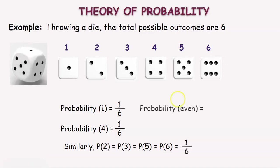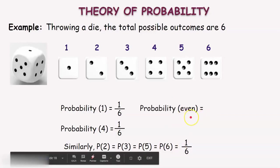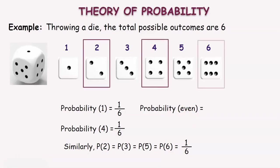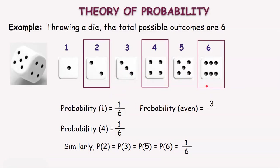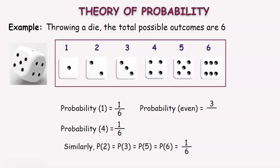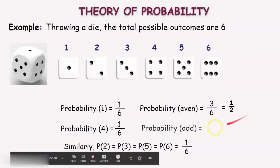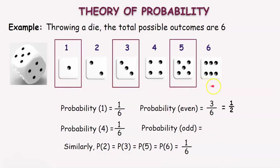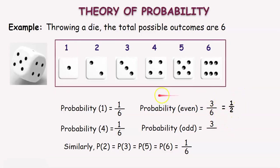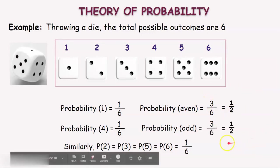Suppose we want to find the probability of getting an even number. There are 3 ways to get an even number — that is, 2, 4, and 6 are the favorable outcomes. Therefore, P(even) is equal to 3 divided by 6 possible outcomes, which is equal to 1 by 2. Similarly, to find the probability of an odd number, there are 3 ways — that is, 1, 3, and 5 are the favorable outcomes. So P(odd) is equal to 3 divided by 6, which is also 1 by 2.